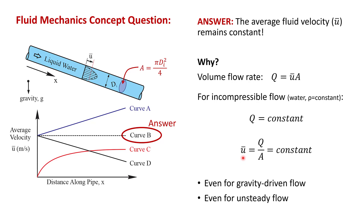This type of pipe flow would normally be driven by a pump, but this answer is the same even for a purely gravity-driven flow. This is not like a ball rolling downhill — the flow doesn't speed up. It's even true for an unsteady flow. If, for example, the pump increases the flow rate, the instantaneous flow rate will be the same at any cross-section in the pipe, so the average velocity of the fluid will be the same at any x location in the pipe.